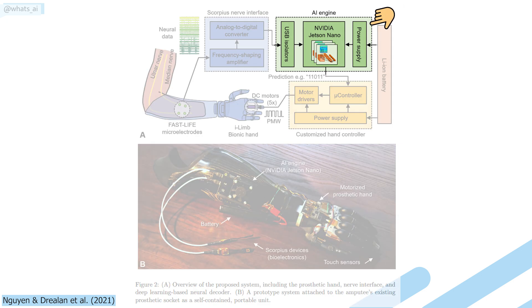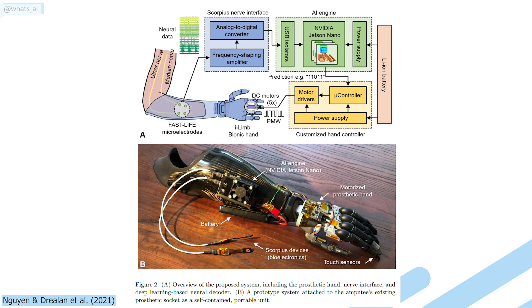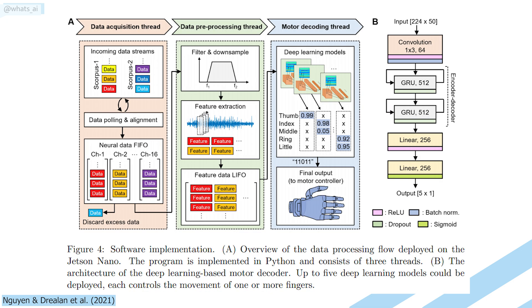But let's dive a little more into the deep learning side of this insane creation. Here, their innovation lay into optimizing the deep learning motor decoding to reduce as much as possible the computational complexity into this Jetson Nano platform. This image shows an overview of the data processing flow on the Jetson Nano.